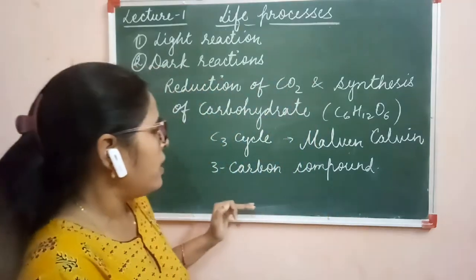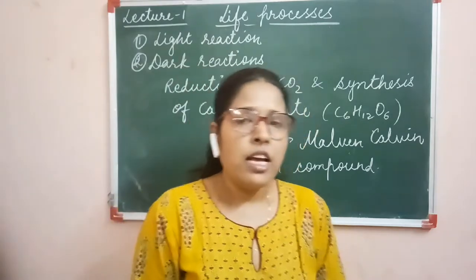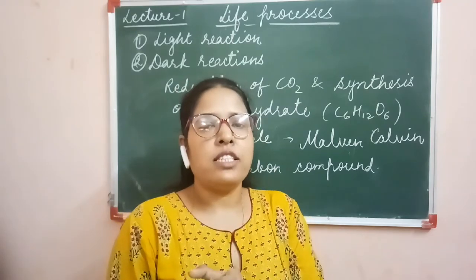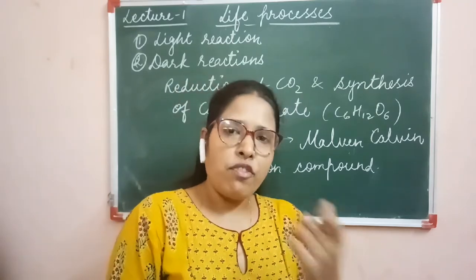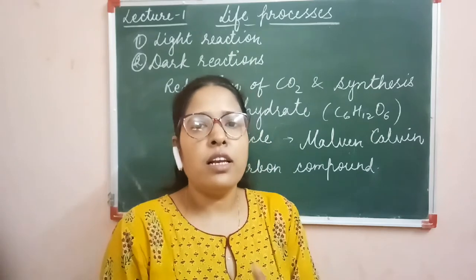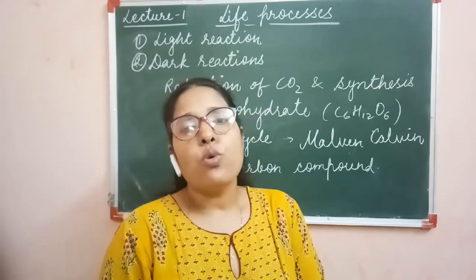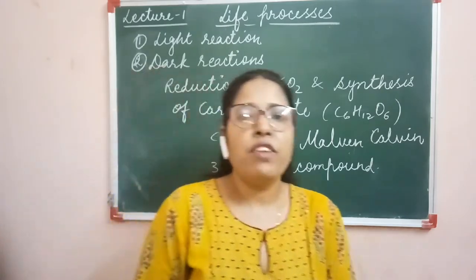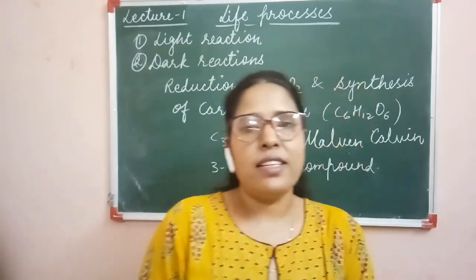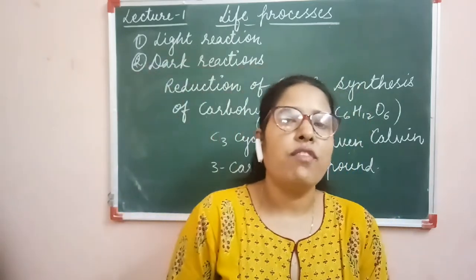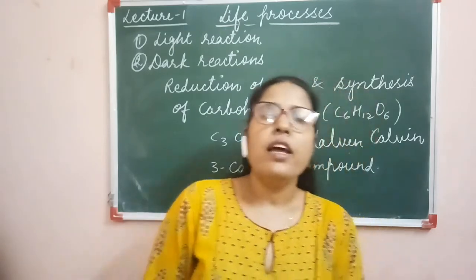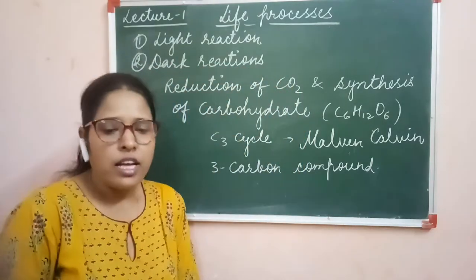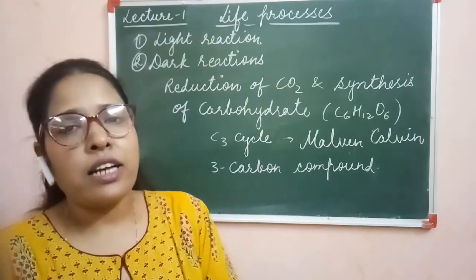That's why it is called the C3 cycle. In addition, some plants have modifications in their leaves due to which a C4 cycle runs there. We call them C4 plants because the first stable product formed there is a 4-carbon compound, which is called oxaloacetic acid. The details of C3 and C4 cycles will be studied in class 11. Here we just needed a short introduction. With the completion of dark reaction, the process of photosynthesis is also complete.